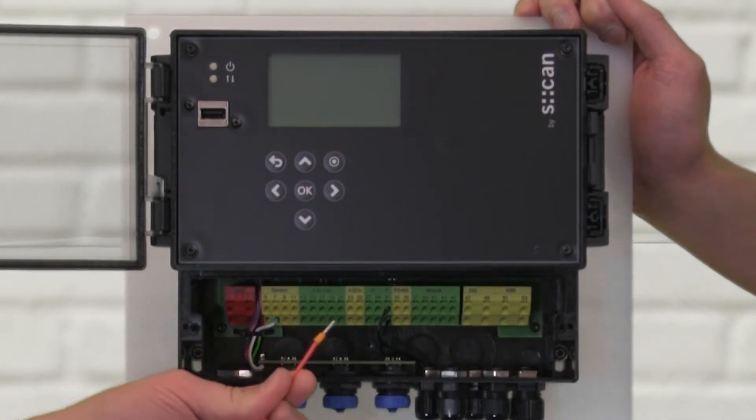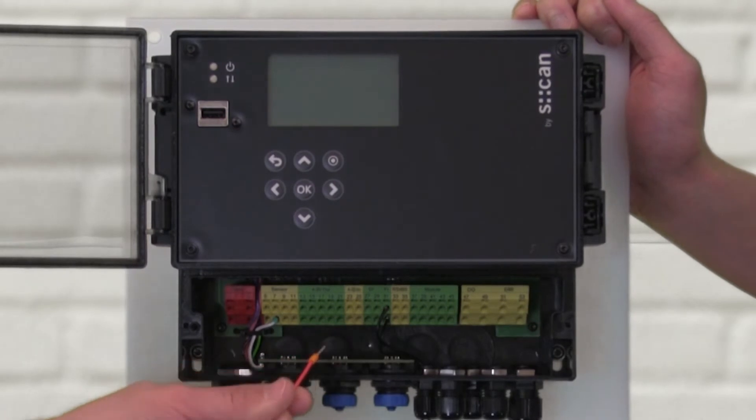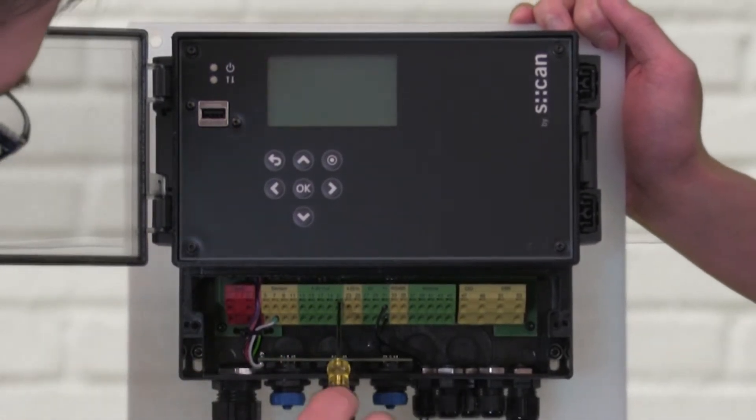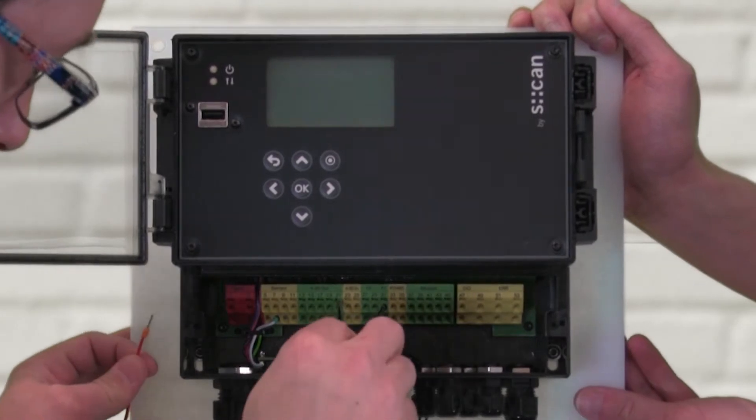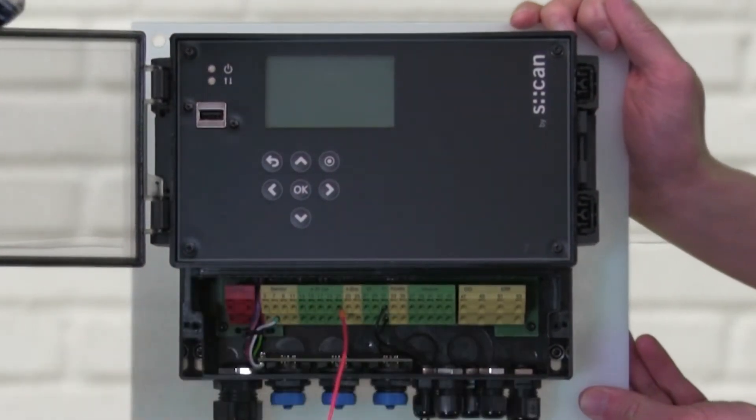Use ferrules and a crimper. This makes it easier to slide the leads into the different terminals. This is one of the spring-loaded style terminal strips, so it takes a little tension with the small electrical screwdriver to make the connection.